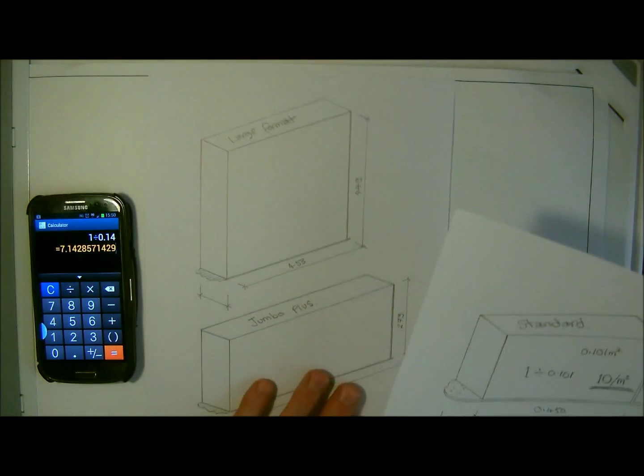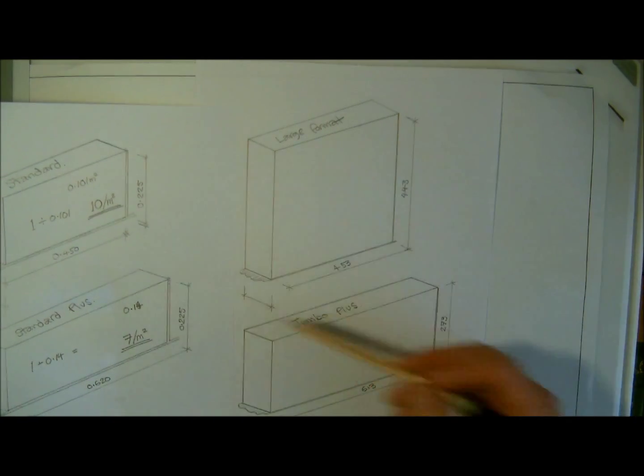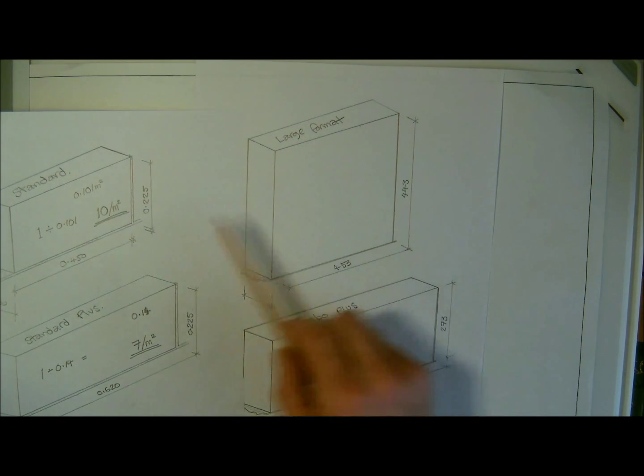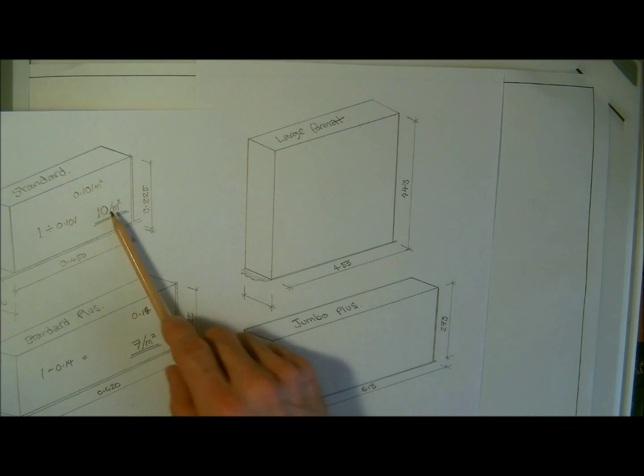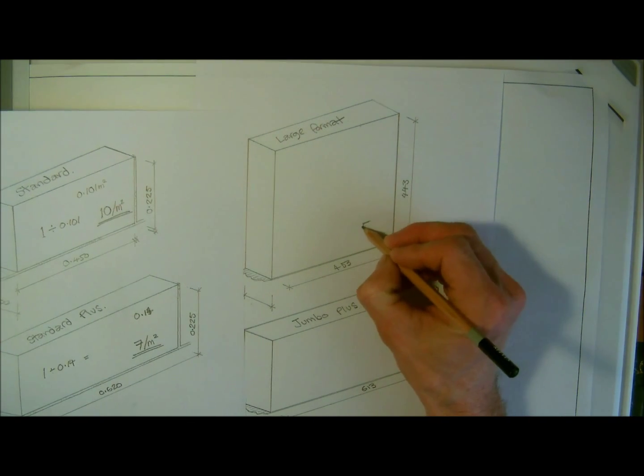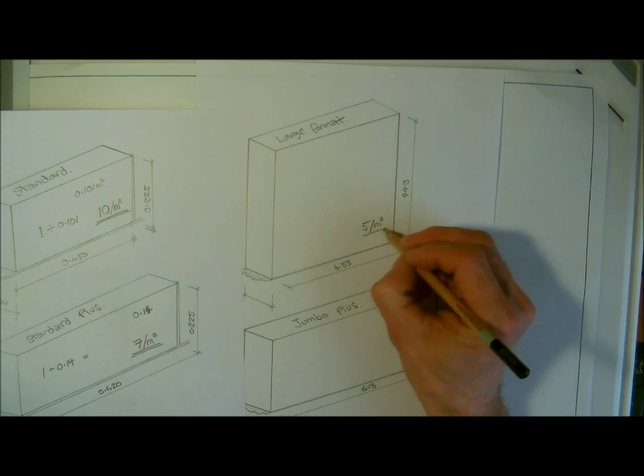I will just keep this one here, because again, this one we don't really have to do a calculation on it, because we do the same principles, but we can see that this is virtually twice the size of this one. So, we know the large format, we're going to be looking at 5 blocks per metre squared, underlined.